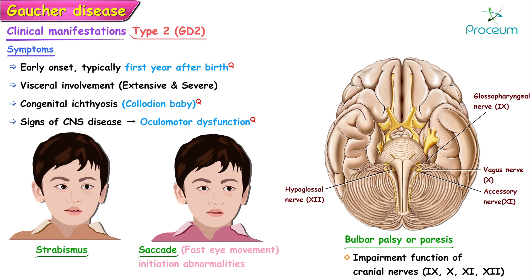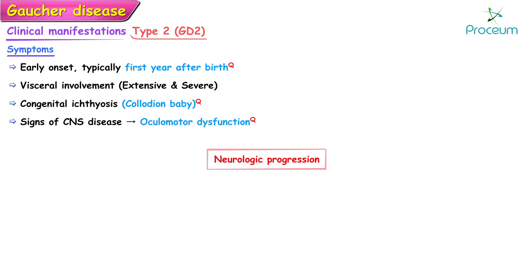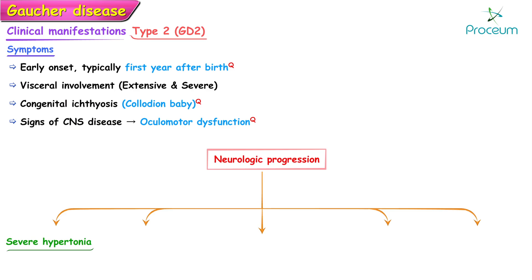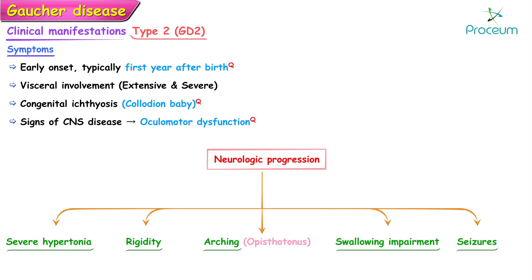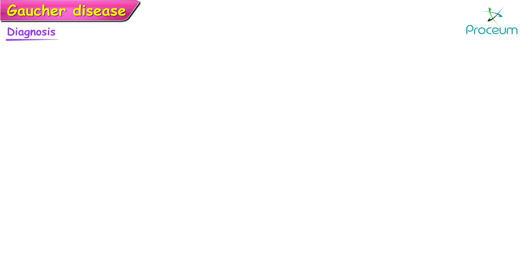Children with saccadic initiation abnormalities may compensate for lack of saccades by moving their head to shift their gaze. Neurologic progression is marked by severe hypertonia, rigidity, and arching of the back giving an opisthotonus posture, swallowing impairment, and seizures.